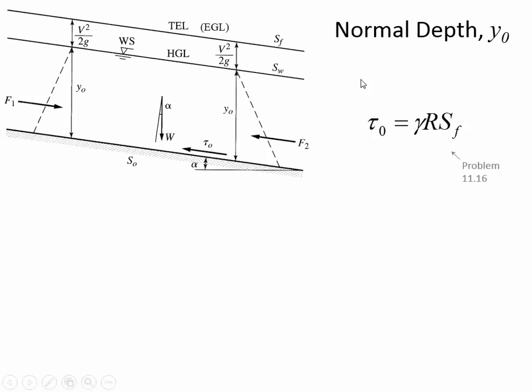The shear stress relationship tells us that we can know the magnitude of shear stress if we know the slope of the energy grade line. R is the hydraulic radius — cross-sectional area divided by the wetted perimeter. For a trapezoidal channel, the wetted perimeter includes only the section touching the water, not the air-exposed top. Gamma is the unit weight of the liquid. Often what we don't know is the flow depth, which is called normal depth.